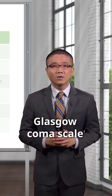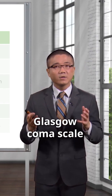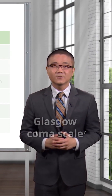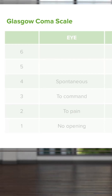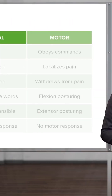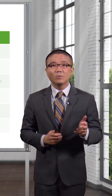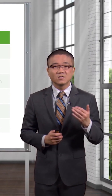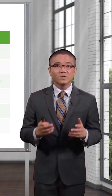The Glasgow Coma Scale has three components. It's a global assessment of the patient's neurological status. Take a look at this table. You'll notice that there are columns for eye, verbal, and motor examinations. The coordinated effort of a patient who is able to open their eyes, speak to you, and move their extremities is one that is an oriented patient.